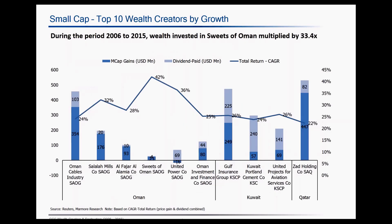In terms of wealth creators by total return, Oman-based Sweets of Oman — which is into manufacturing of sweets and sugar confectionery — is the top performer, having generated close to about 42% CAGR return for its investors. Its market cap has in fact doubled over the assessment period, from close to about 1 million at the end of 2006 to 24 billion by 2015. The only company from Qatar that has made it to this wealth creators list is Zad Holding Company, which created the highest wealth of 447 million in terms of capital gains and 82 million in terms of dividends for its investors.